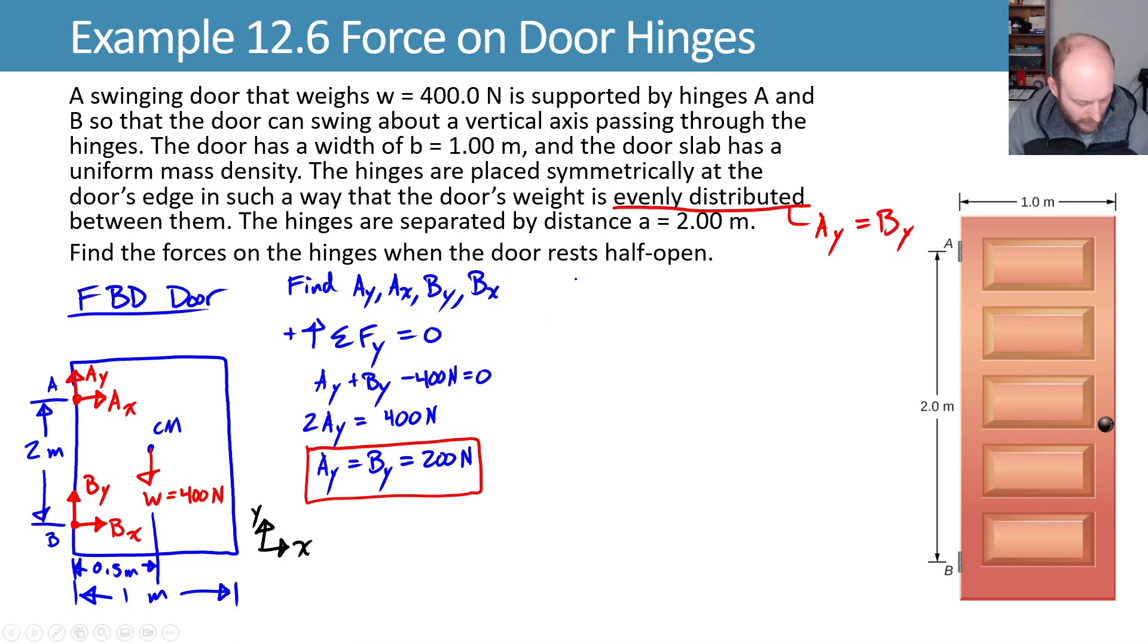Let's do the sum of our forces in the X. Call the right positive. Now we have AX plus BX equals zero. This just says that AX is equal to negative BX.